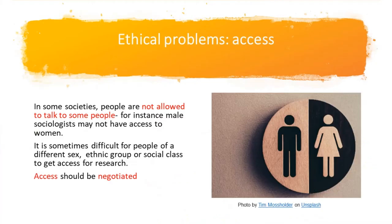There are people that sociologists can access more easily and others not easily accessible. In some societies, people are not allowed to talk to the opposite sex. Male sociologists may not have access to women. It may also be difficult for people of a different ethnic group or social class to get access and speak to people freely. Access should be negotiated.